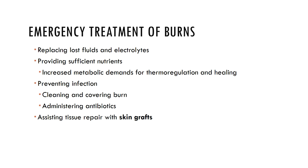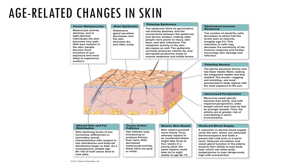There are also age-related changes that occur in the skin. Melanocyte activity declines, and in light-skinned individuals the skin can become pale, making people more sensitive to sun exposure and more likely to experience sunburns. Sebaceous gland secretions decrease with age, so the skin can become more dry and often scaly. The epidermis thins as cell activity declines, and the connections between the epidermis and dermis weaken, making us more prone to injury, skin tears, and skin infections.